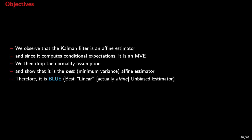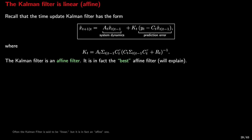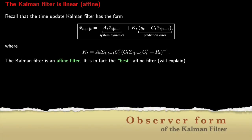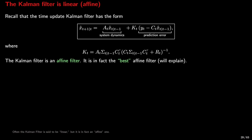Well, actually it is affine, not linear. But BLUE sounds nice. By combining the time and measurement updates of the Kalman filter, we can obtain this update equation. This discrete-time dynamical system is sometimes referred to as the observer form of the Kalman filter. The Kalman filter in this form is clearly an affine estimator of x_{t+1}, given all outputs from time 0 to time t.